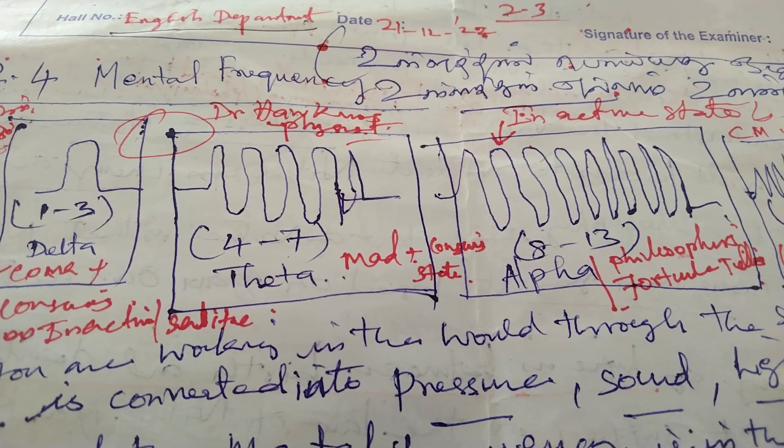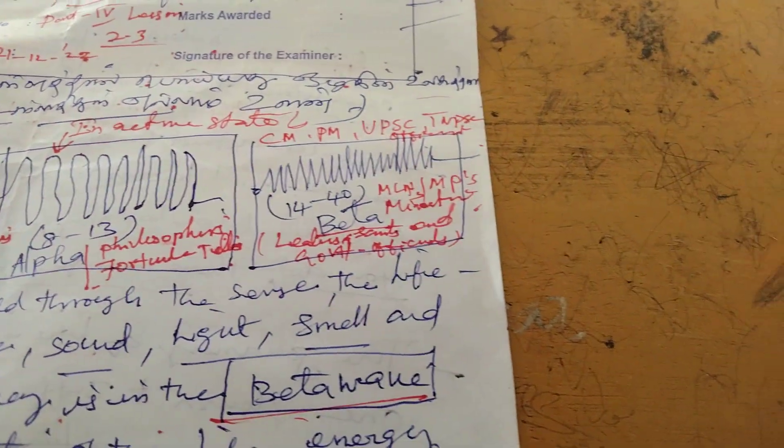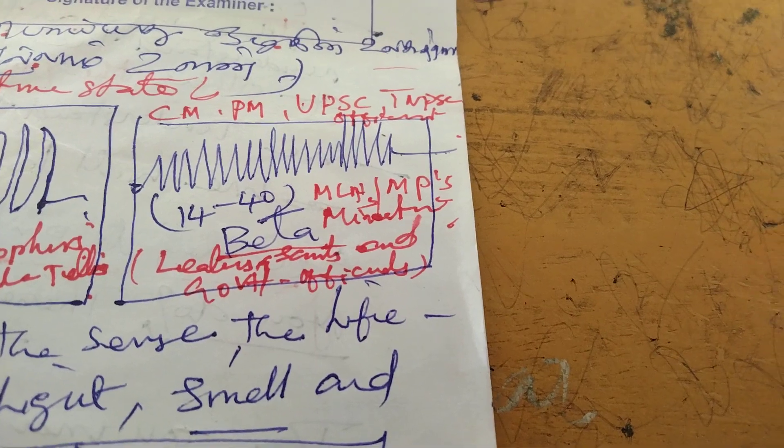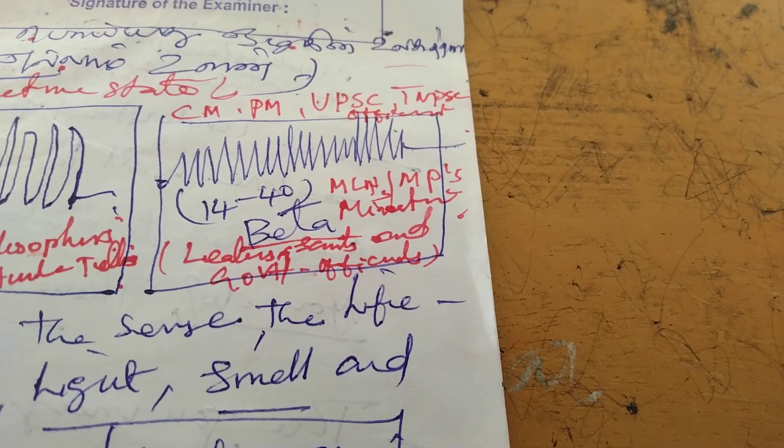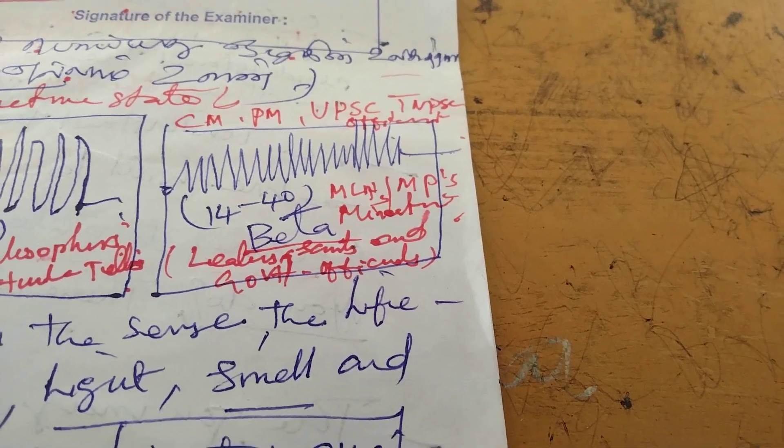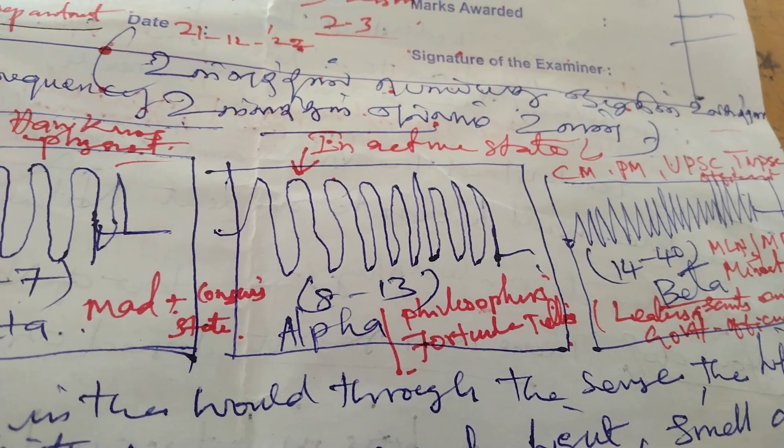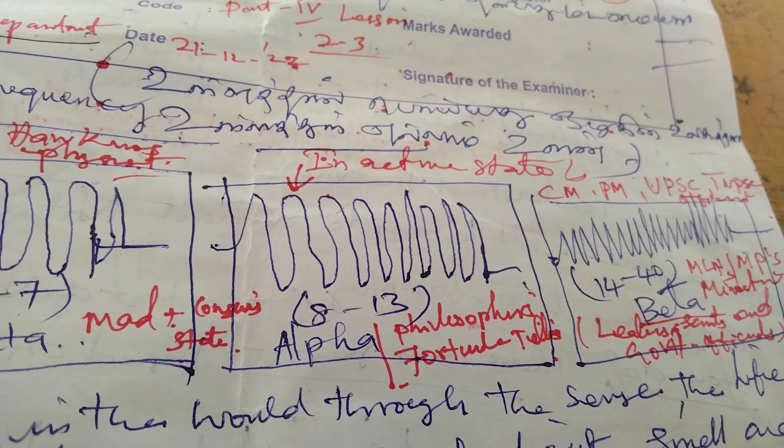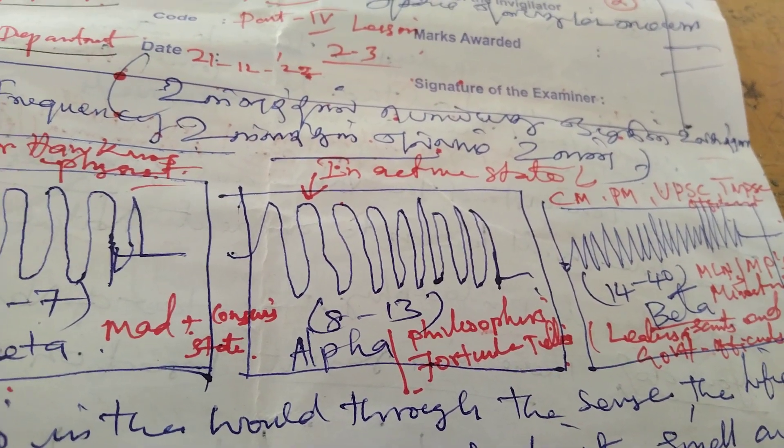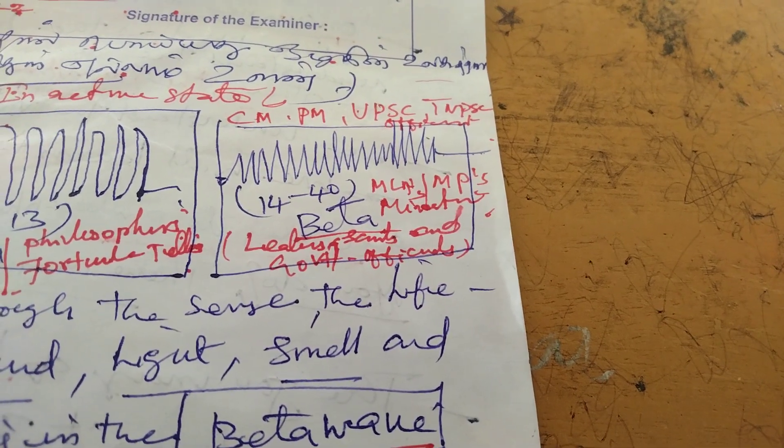Mind frequency is divided into four kinds: delta state, theta state, alpha state, and beta state. All the successful peoples are working and doing activities in this beta state. They are utilizing maximum amount of physical and mental energy. Then only they lead a better, successful, and peaceful life without any problem. But the rest of the peoples live in alpha state, and less amount of energy is consumed. That's why we are getting less amount of success.